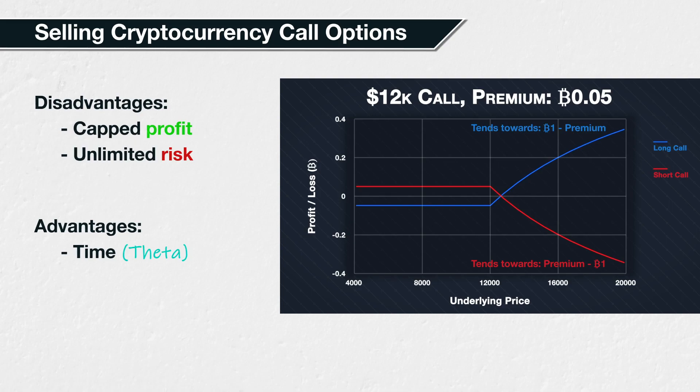When buying a cryptocurrency option, the buyer is required to pay the entire premium up front to open the position. As the maximum the long call option can lose is the premium paid, this is the only capital the buyer needs to use. The maximum loss for the seller though can be more than they collect in premium, so they are required to keep an extra amount in their account to cover potential losses. This amount is called their margin, and is calculated according to formulas that you will find on the exchange's website.